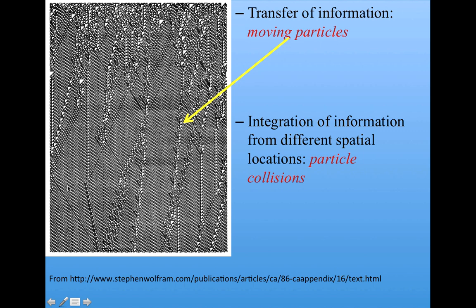And so, these moving particles can integrate information from different spatial locations and collide with one another. So, for example, here we see this particle colliding with this particle and creating a new particle. And the idea is that information can be stored in these more regular patterns, transferred via these particles, and processed via the particle collisions.